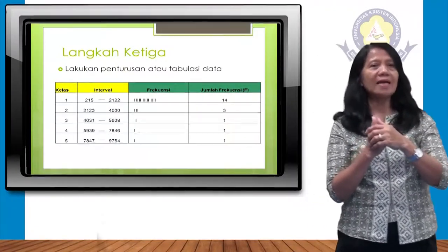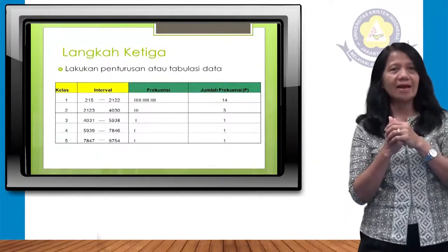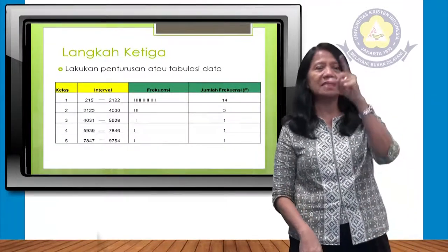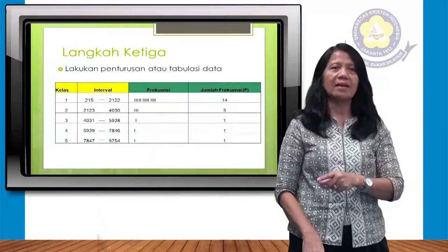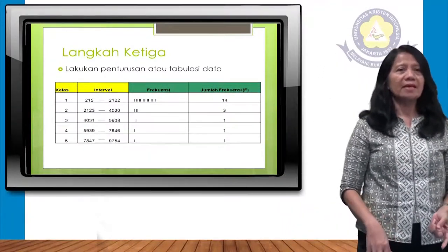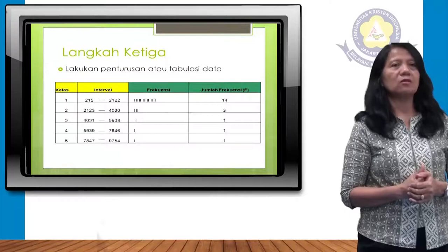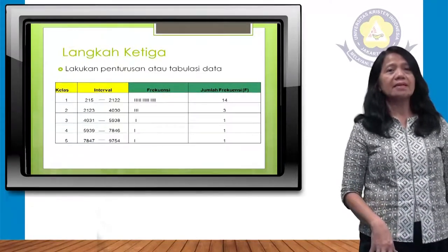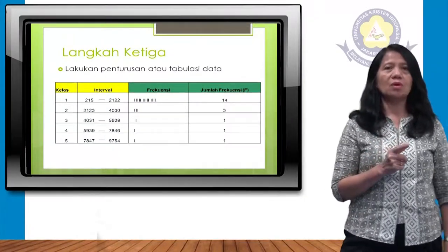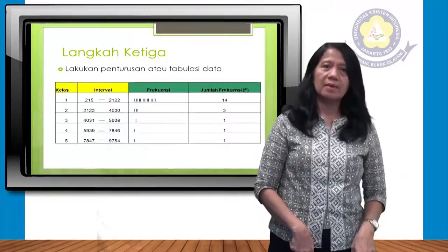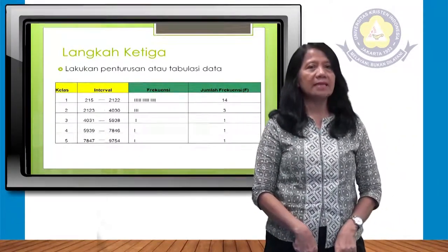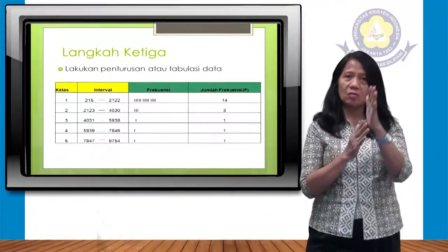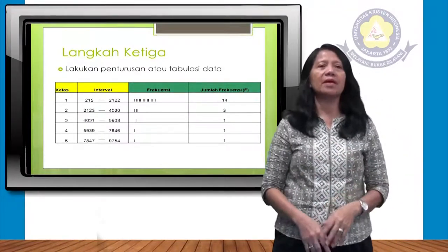Kelas keempat 5.939 sampai 7.846, frekuensinya tetap 1. Kelas kelima 7.847 sampai 9.754, frekuensinya 1. Kalau mau, kita bisa cek di tabelnya.